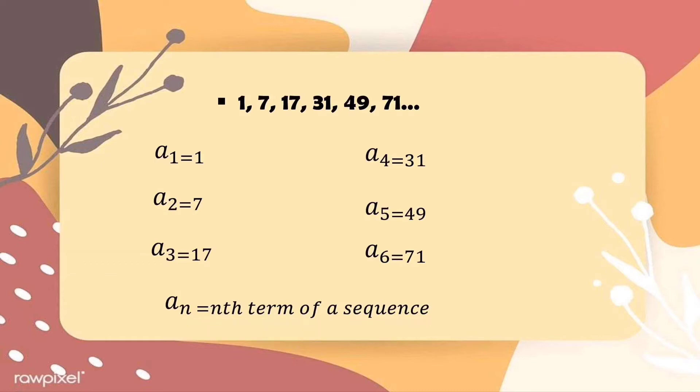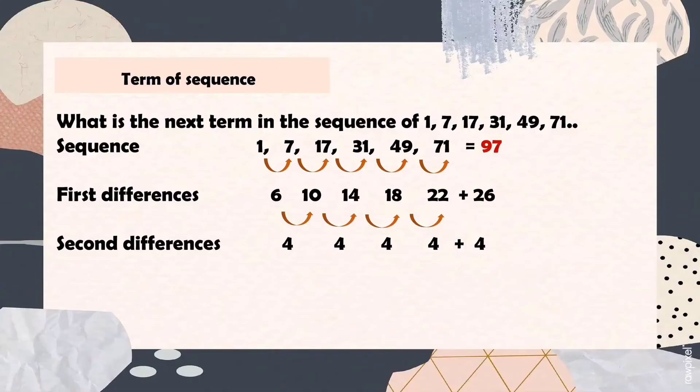As you can see, we have three dots here, so it means that the sequence continues beyond 71. So let's move on. What is the next term in the sequence of 1, 7, 17, 31, 49, 71? To answer these questions, we often construct a difference table. We have different ways to get the next term for a given sequence, but this time we are going to use the difference table method.